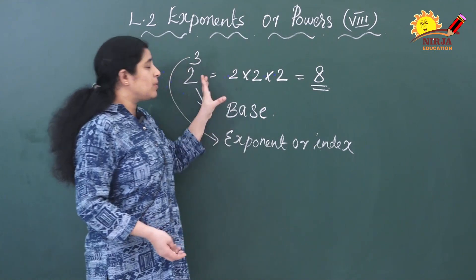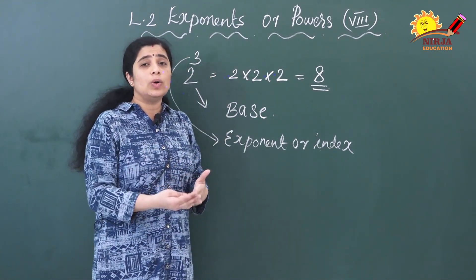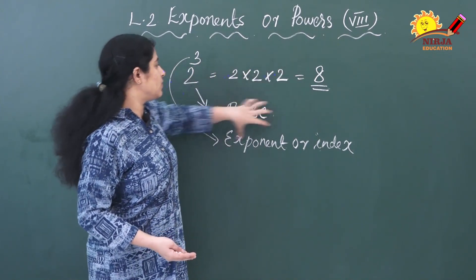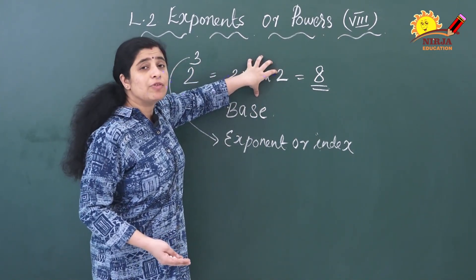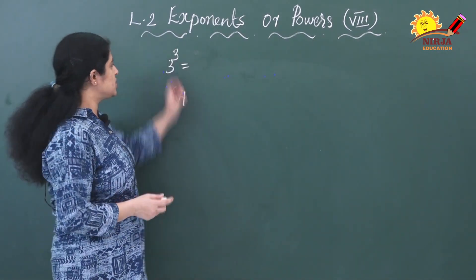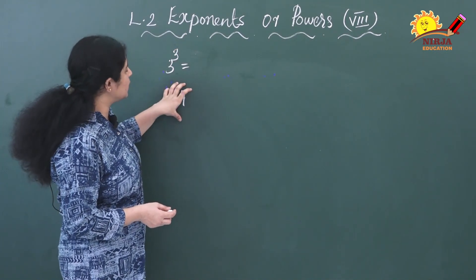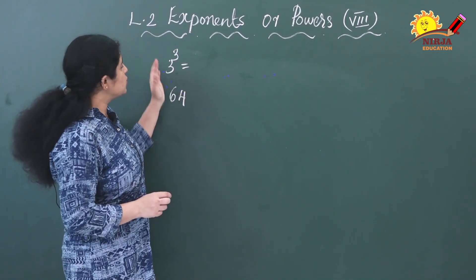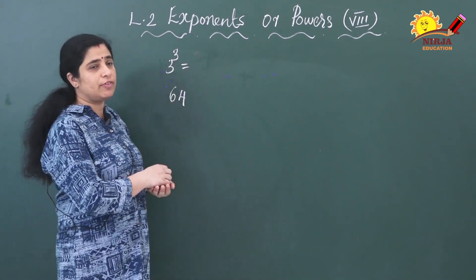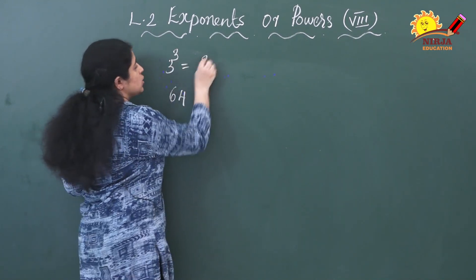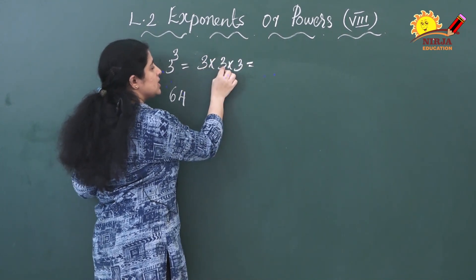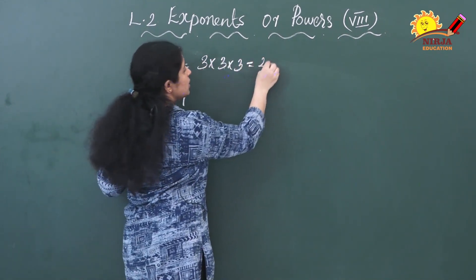Now we will see some problems — how can you convert a number from this form to exponential form. I have written 2 questions here: one is in exponential form and the other is in simple form. First we will see how to convert into simple form. 3 raised to 3 means you have to multiply 3 three times: 3 threes are 9 and 9 threes are 27.